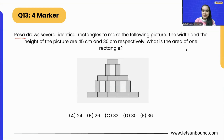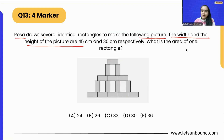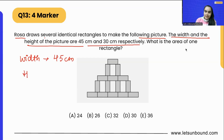The question is: Rosa draws several identical rectangles to make the following picture. As you can see in the picture, all these rectangles are identical. The width and the height of the picture are 45 centimeters and 30 centimeters respectively.